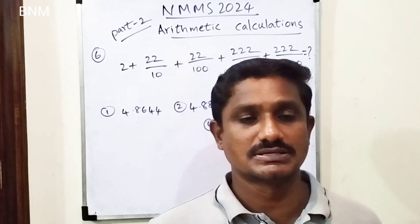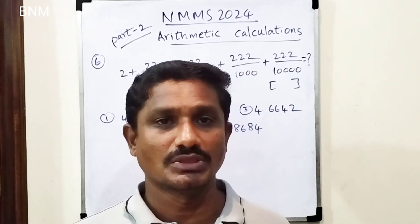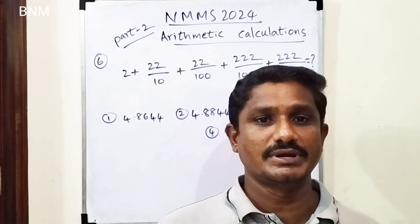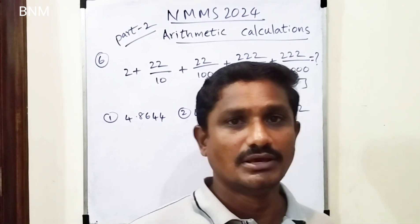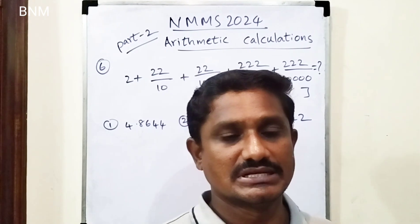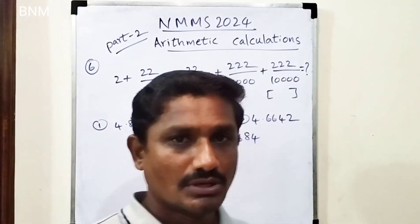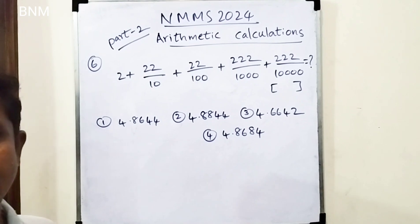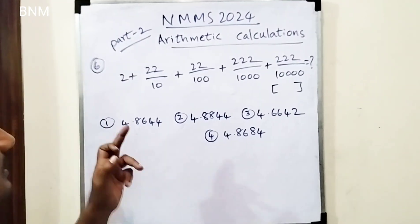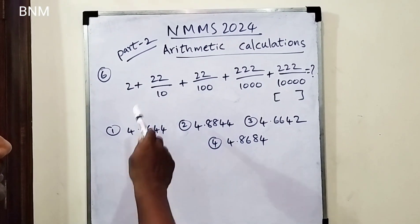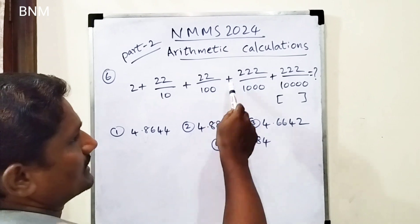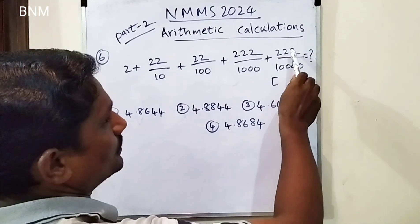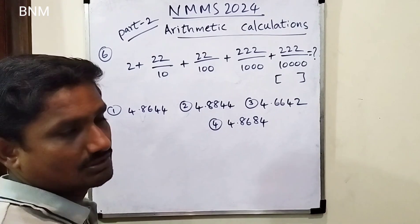This is Part 1 video of NMMS 2024. This is Part 2 bits. First one is decimals. The problem is 2 plus 22 by 10 plus 22 by 100 plus 222 by 1,000 plus 222 by 10,000.